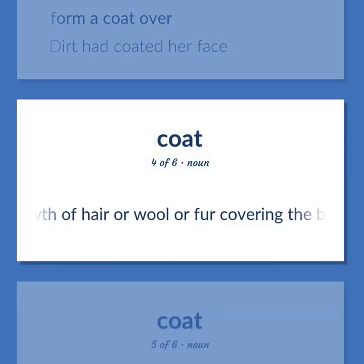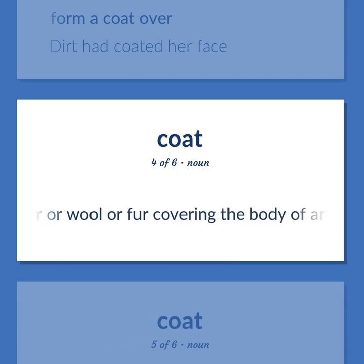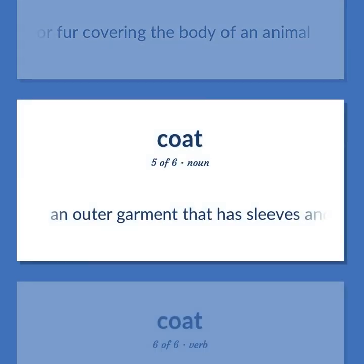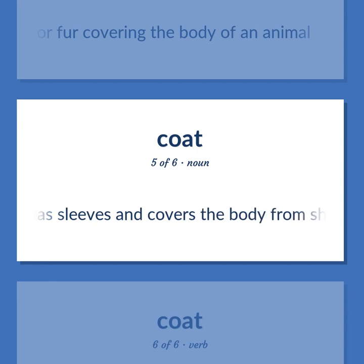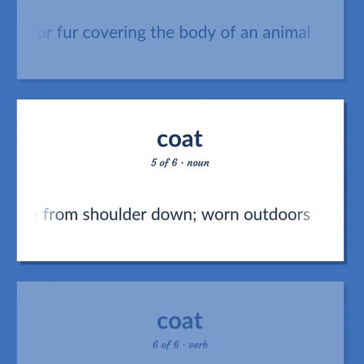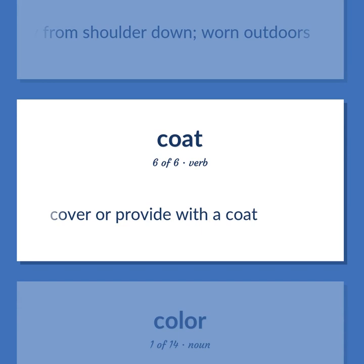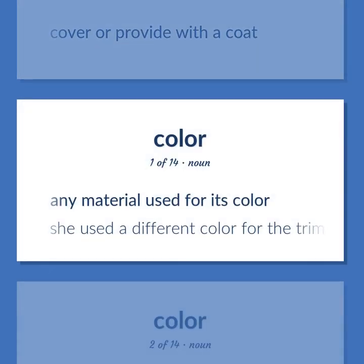Growth of hair or wool or fur covering the body of an animal. An outer garment that has sleeves and covers the body from shoulder down, worn outdoors. Cover or provide with a coat. She used a different color for the trim.